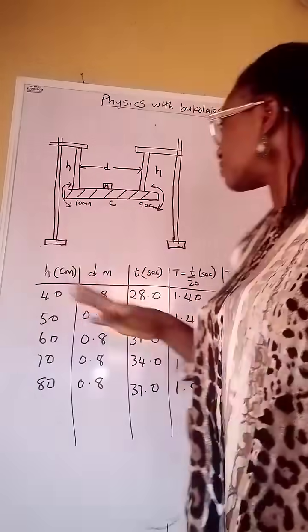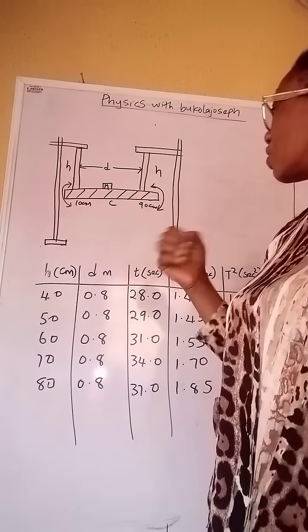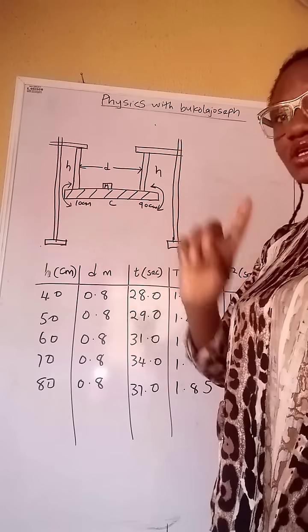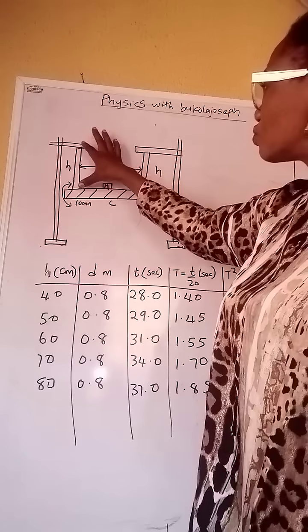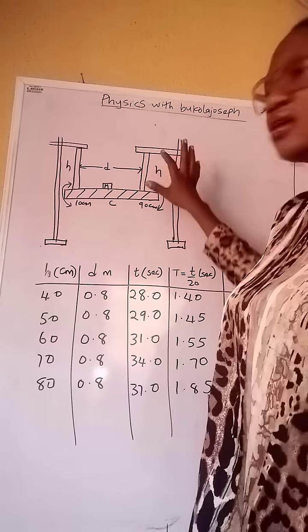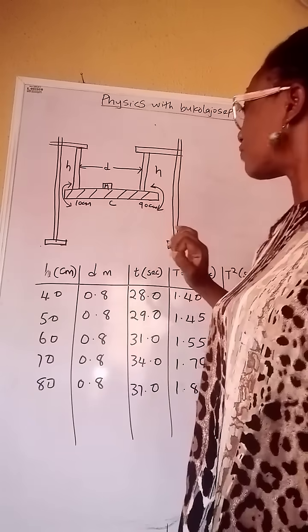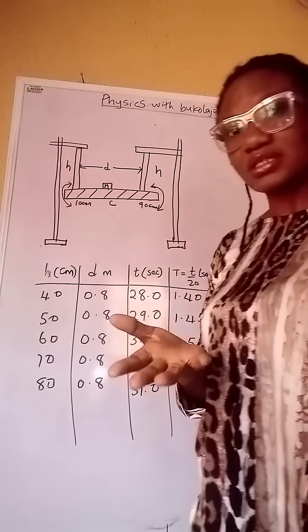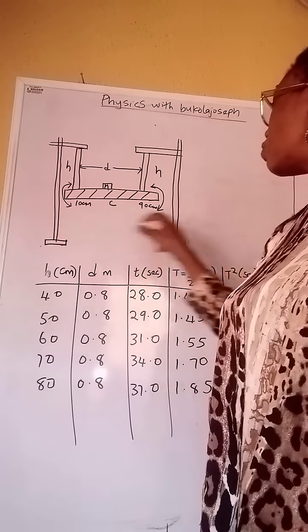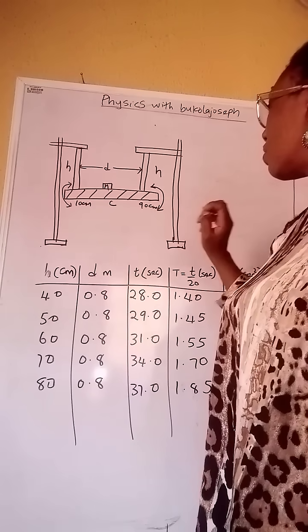Now the apparatus for this experiment, like you can see on the board, you have two meter rules. The other meter will be used to measure the height for the experiment you are performing. Then three retort stands is needed. Though we have two on this setup.